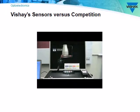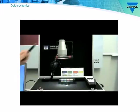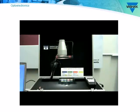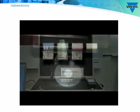Let's take a look at a test showing how Vishay's ambient light sensors perform versus the leading competition. The first light source is a halogen lamp with a high portion of infrared emission. The second is a white LED light source with basically no infrared portion in its emission spectrum. Furthermore, we have three different positions for the sensor components.